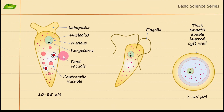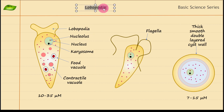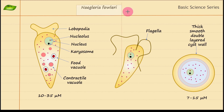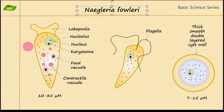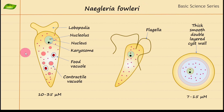Today we will be understanding one of the important parasitic organisms, which is Naegleria fowleri. Naegleria fowleri is one of the important free-living amoeba — it doesn't require any host, and if there is any host, that is most of the time accidental. Naegleria fowleri causes primary amoebic meningoencephalitis, also known as PAM.